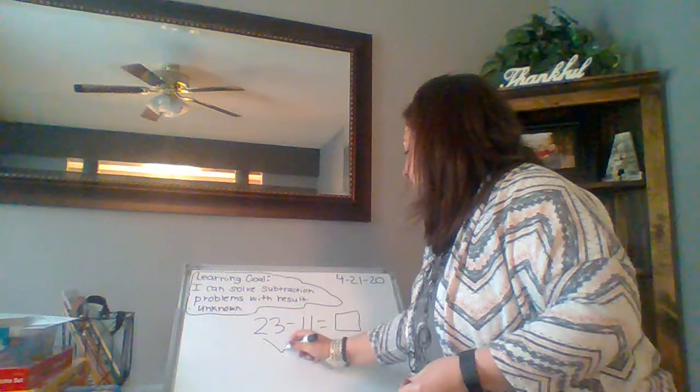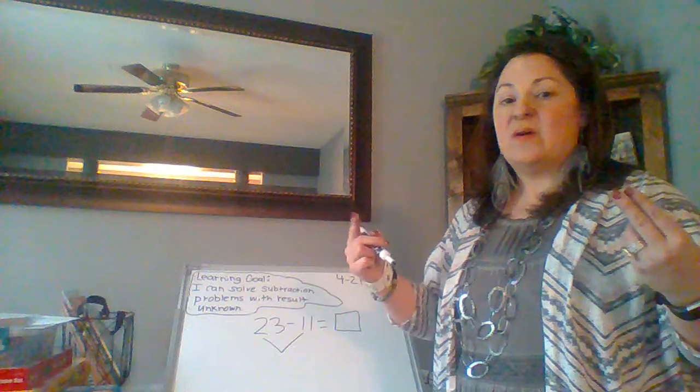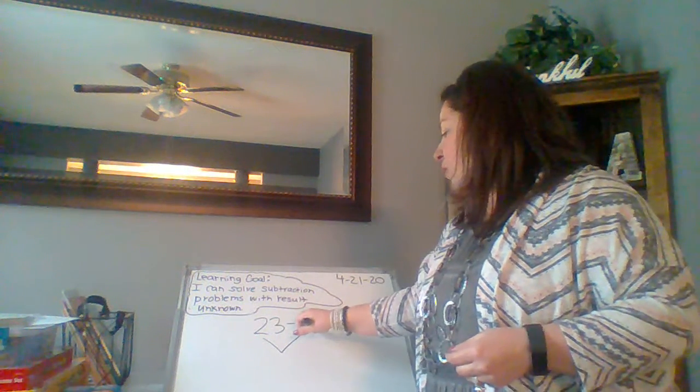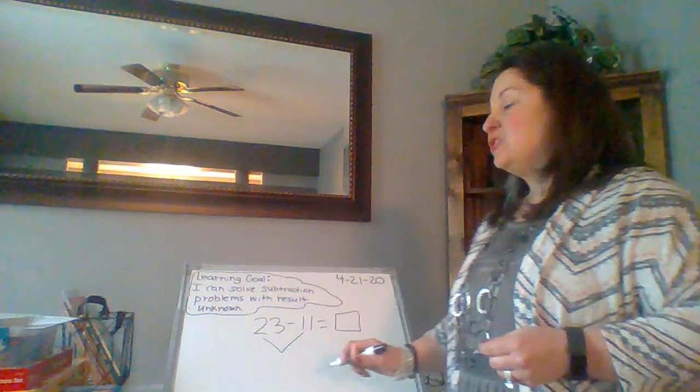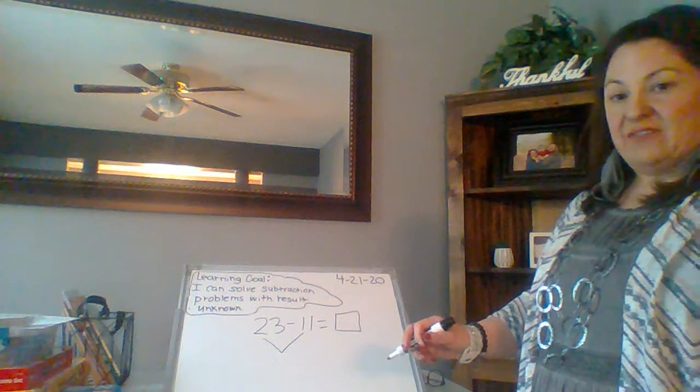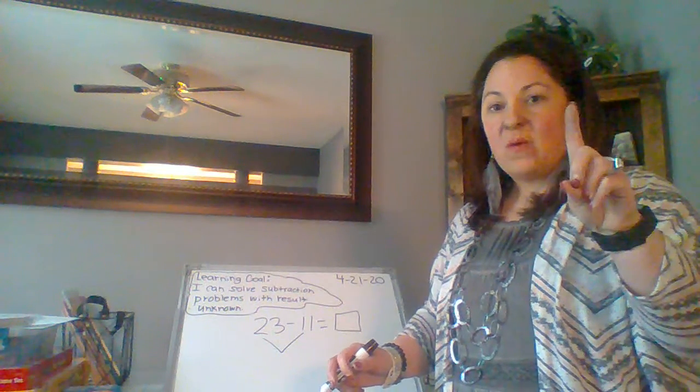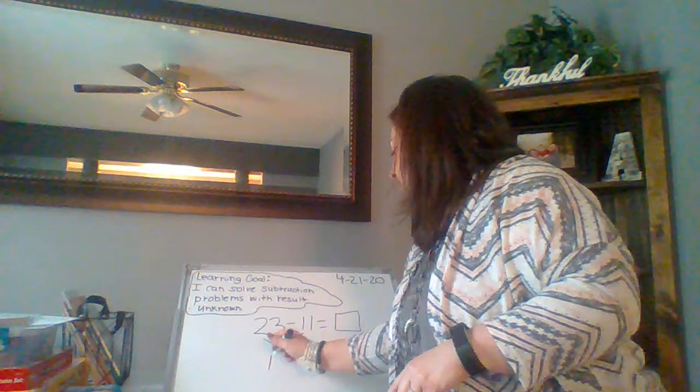So let's look at the 10s first. So I have two 10s and one 10, but I'm going to take one 10 away from the two 10s that I have. So if I have two 10s and I take away one 10, that leaves me with a 10, right?